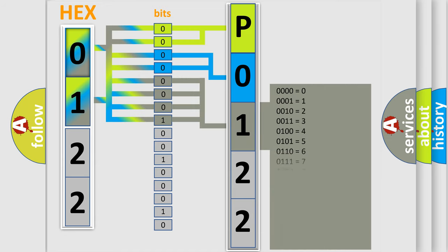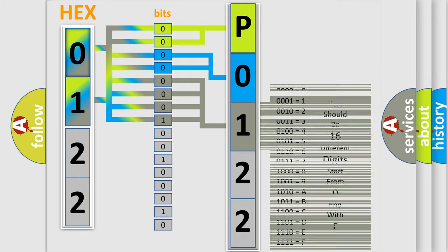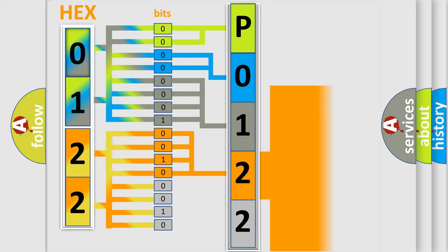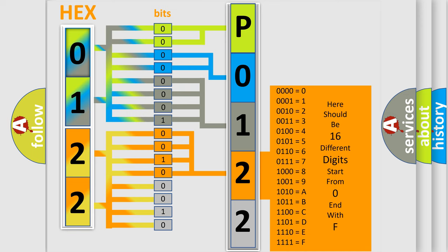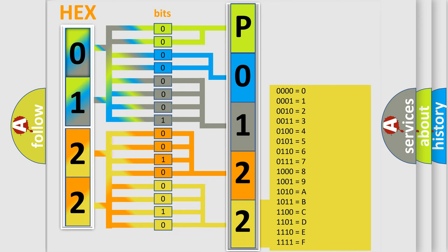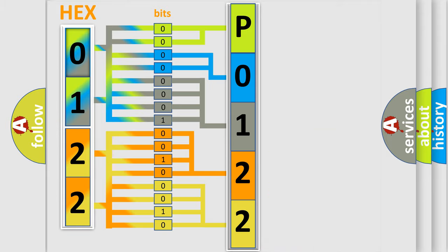The second byte is composed of a combination of eight bits. The first four bits determine the fourth character of the code, and the combination of the last four bits defines the fifth character. A single byte conceals 256 possible combinations. We now know how the diagnostic tool translates the received information into a more comprehensible format.